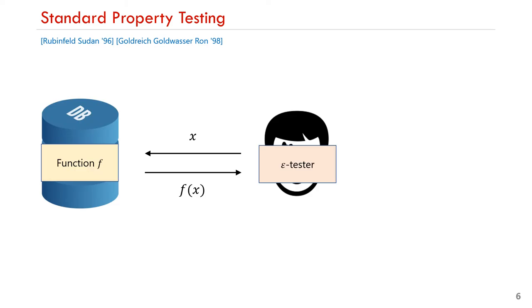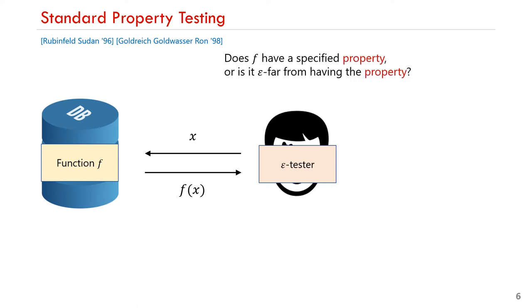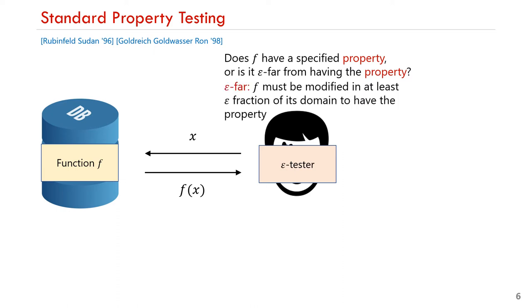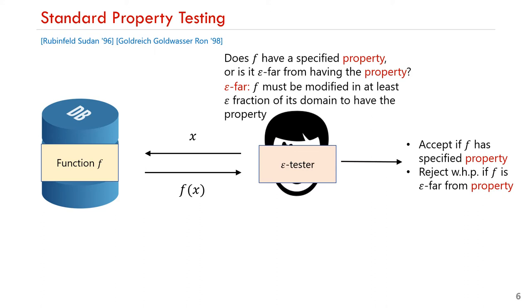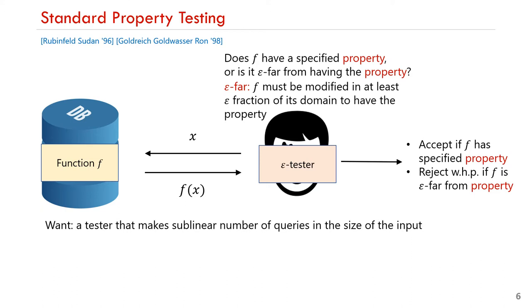In this work, we consider property testing tasks, which are a special case of sublinear time algorithms. Property testing was first introduced by Rubinfeld-Sudan and Goldreich-Goldwasser-Ron. In this model, the algorithm is given a parameter epsilon between 0 and 1, and its goal is to determine whether f has a specified property or if it is epsilon-far from the property. By epsilon-far, we mean that f must be modified in at least an epsilon fraction of its domain to have the property. The tester is supposed to accept if f has the specified property, and reject with high probability if f is epsilon-far from such property. Since we are in a sublinear regime, we want a tester that makes a sublinear number of queries. In this model, we assume perfect access to f, meaning that for every query x, the algorithm will receive the true value f(x).